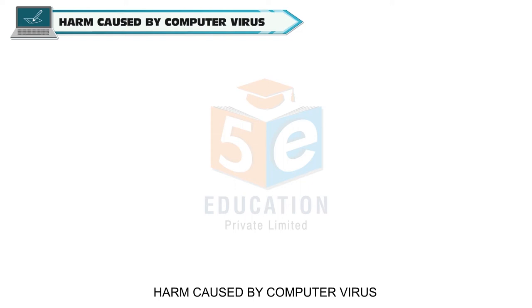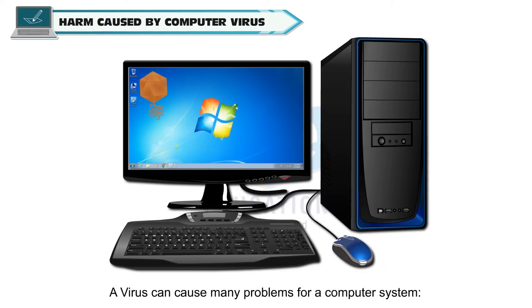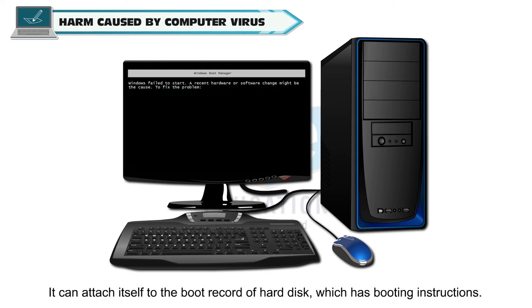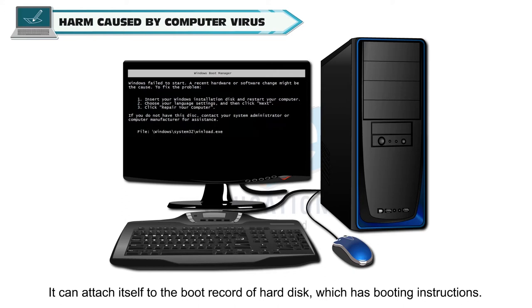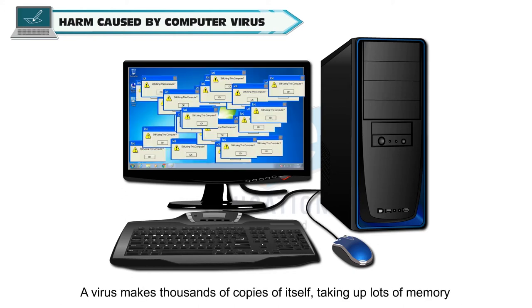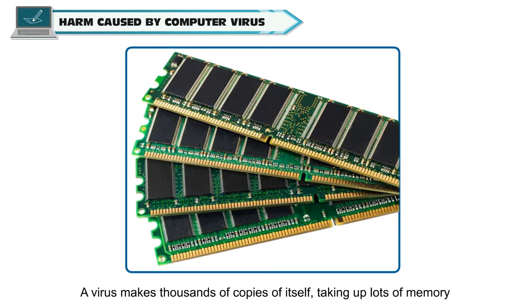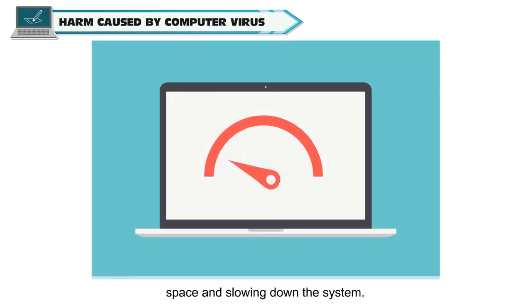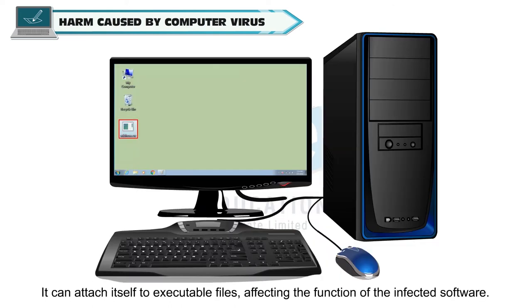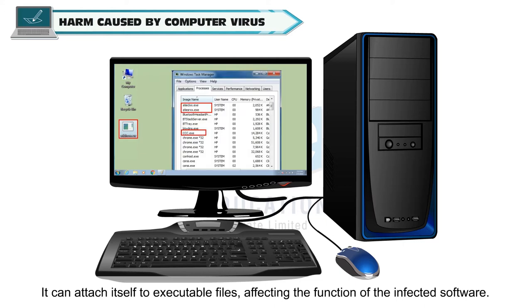Harm Caused by Computer Virus. A virus can cause many problems for a computer system. It can attach itself to the boot record of a hard disk, which has booting instructions. A virus makes thousands of copies of itself, taking up lots of memory space and slowing down the system. It can also attach itself to executable files, affecting the function of the infected software.